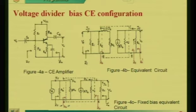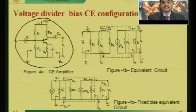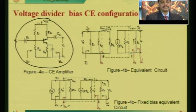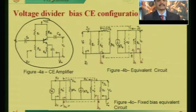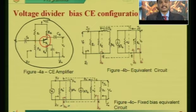Figure 4A is the actual connection circuit diagram. You have to transfer this circuit diagram into its equivalent model. First, you have to identify the base, emitter, and collector. Then transfer this transistor into its equivalent circuit as shown in the dotted line, where base, collector, and emitter are connected.